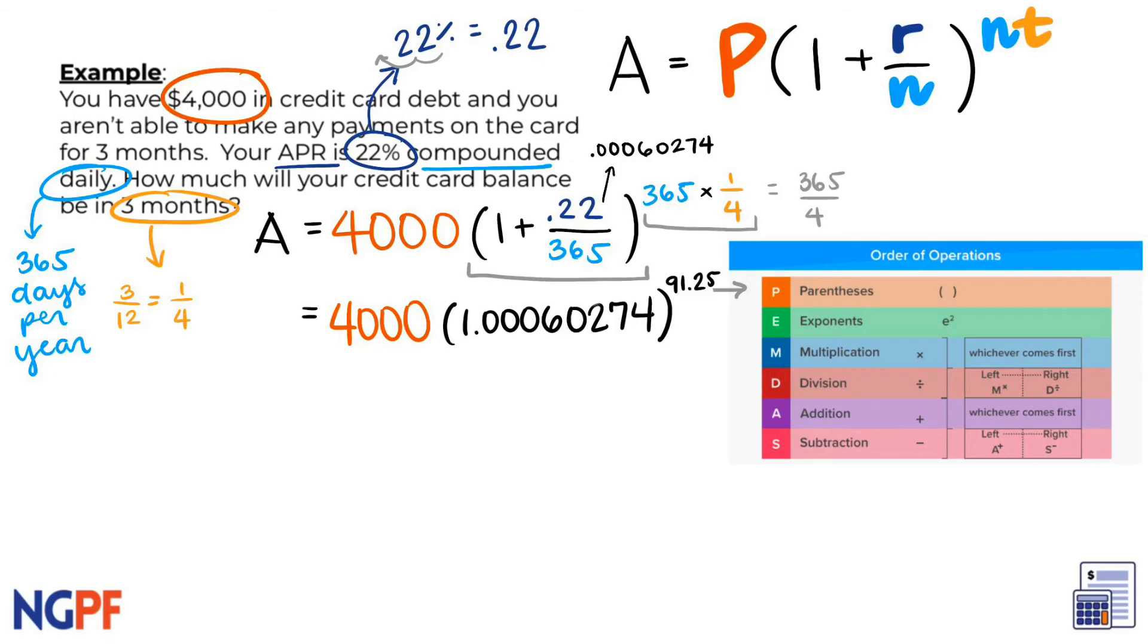Our complicated formula is now a little less complicated, and now we only have two more operations to carry out, multiplication and exponents. Following order of operations, we must first carry out the exponents, so we can drop and keep the 4,000, and then take 1.00060274 to the 91.25 power, which gives us 1.05652314.